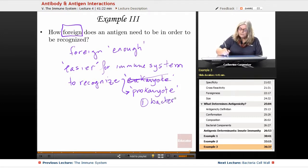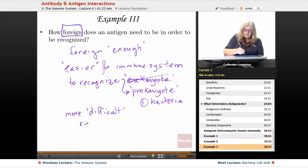So it's easier for the immune system to recognize a cell that is not a eukaryotic cell. It is more difficult - let's put that in quotes - for the immune system to recognize a eukaryote.